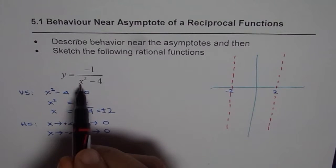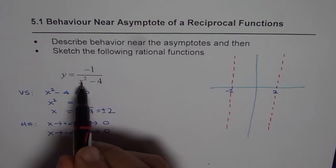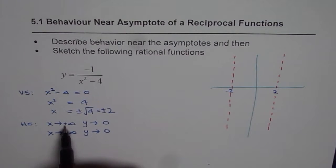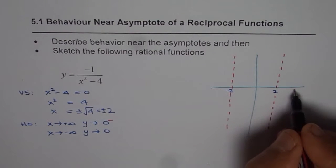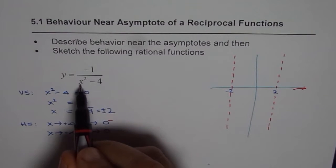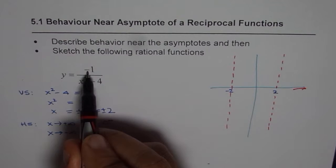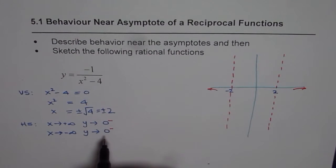If I substitute a large positive value, let's say x = 100, into the function y = -1 / (x² - 4), I get -1 / (100² - 4) = -1 / 9996, which is a negative value — very small but negative. So when approaching from a large positive x, we are approaching 0 from the negative side. Similarly, substituting x = -100, minus 100 squared is still positive, so we again get a negative answer. Both sides we are approaching 0 from the negative side.